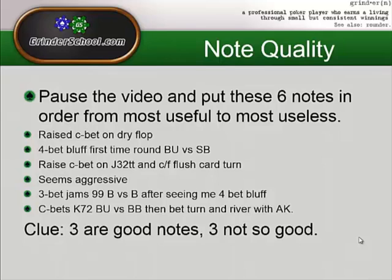'Raise c-bet on Jack-Three-Two two-tone and check-fold flush card turn' — this is an excellent note. Villain raised a two-tone board, which is a standard board to attack a c-bet on, but then didn't follow through on the flush card, meaning he probably doesn't have equity here. He hasn't raised with a backdoor draw or a flush draw — he's probably bluff-raising without much equity. You could even generalize this note to 'villain likely bluff-raises flops without much equity.' It's always good to keep the specific situation too. This is probably the best note here. 'Seems aggressive' is pretty terrible — you'd know that from the HUD anyway.